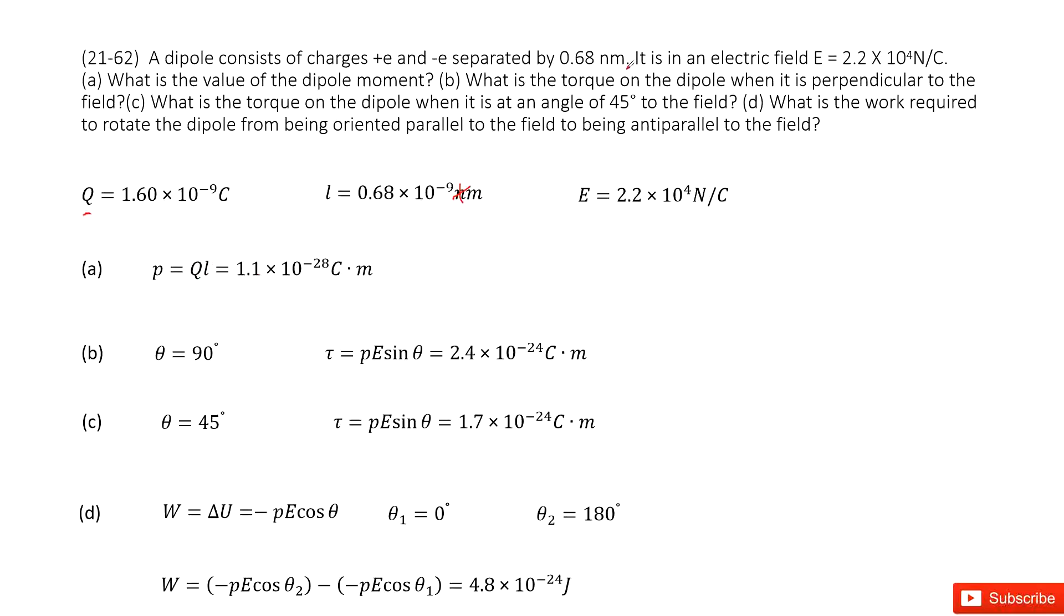The next one is to get the dipole torque when it is perpendicular to the field. So as we learned, for the dipole torque, it is pE sine theta. You can see p is given at part a, E is given. So it looks like we need to find theta. It tells you the theta can be perpendicular to the field. So the theta is 90 degrees. Input known quantities, get the answer there.